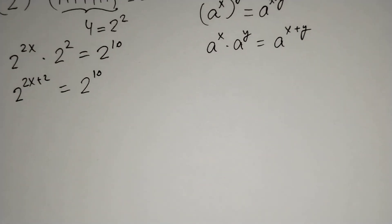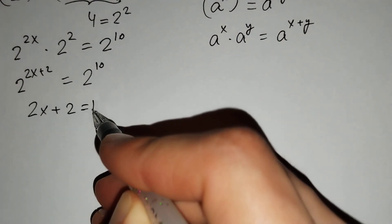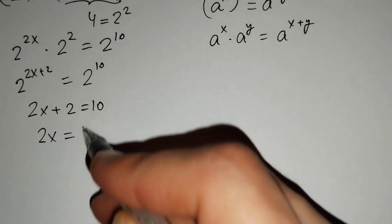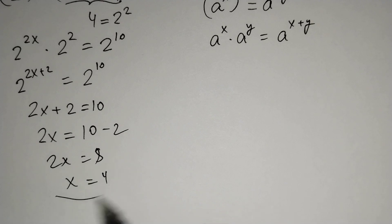so the exponents should be equal: 2x + 2 = 10. And 2x = 10 - 2, so 2x = 8 and x = 4.